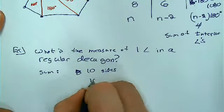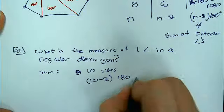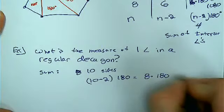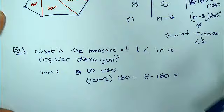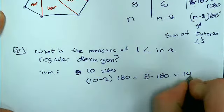So the sum, ten minus two times 180, gives me eight times 180, which is 1440 degrees.